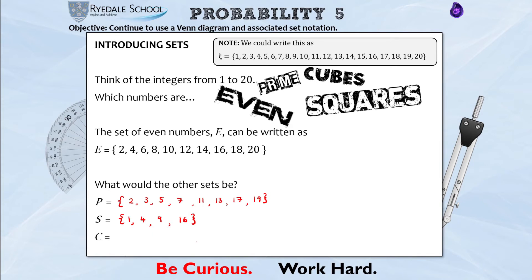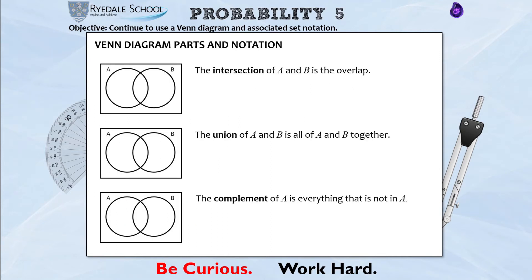Finally, cube numbers. We've got 1 times 1 times 1 which is 1, 2 times 2 times 2 which is 8, and 3 times 3 times 3 is 27 so that is too large, so it is just the numbers 1 and 8. So this is how we can write a list or a set of numbers using set notation and curly brackets. The other new idea for today's lesson is introducing some new vocabulary and notation to go with that as well.